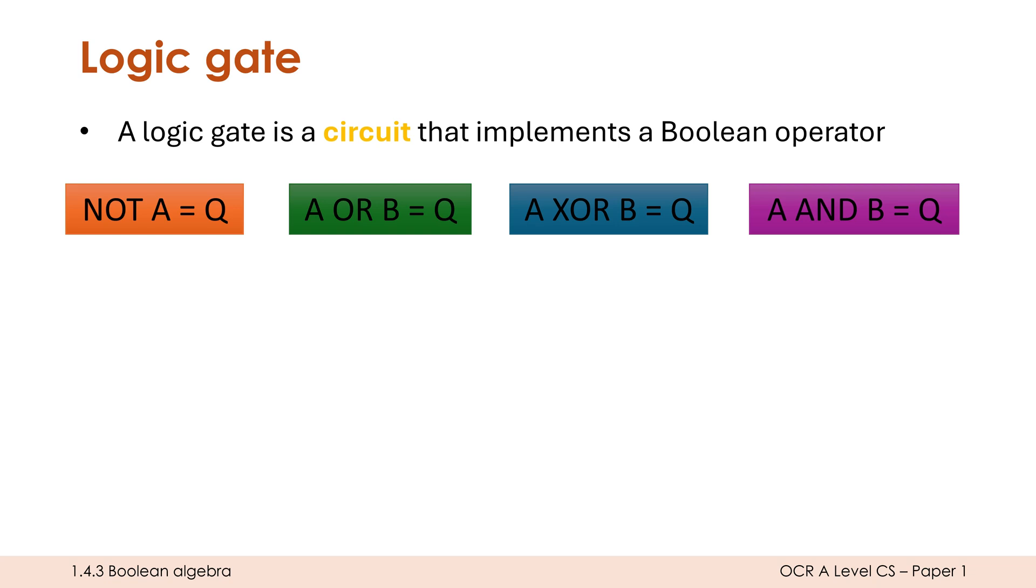There are other Boolean operators as well, not too many more but a few more which use combinations of these operators, and the logic gate actually implements it in a computer. Because if I want to be able to perform Boolean expressions, which I do for things like if statements and while loops and do until loops, I need to have circuitry which can perform these Boolean operators, and those are what logic gates are. A CPU, specifically an ALU, have loads and loads of little circuits which are logic gates which can perform these operations.